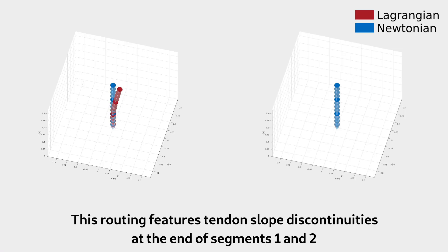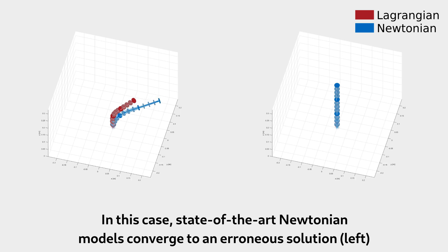This routing features tendon slope discontinuities at the end of segments 1 and 2. In this case, state-of-the-art Newtonian models converge to an erroneous solution.